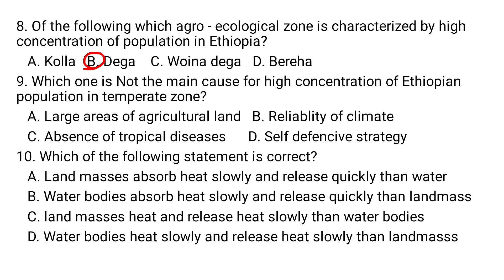Question number nine: which one is NOT a main cause for the concentration of Ethiopian population in the temperate zone? A) Large areas of agricultural land, B) reliability of climate, C) absence of tropical diseases, D) self-defensive strategy. Large areas of agricultural land is not the cause for the high concentration of population in the temperate region of Ethiopia.